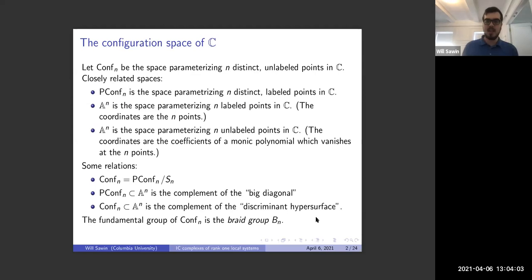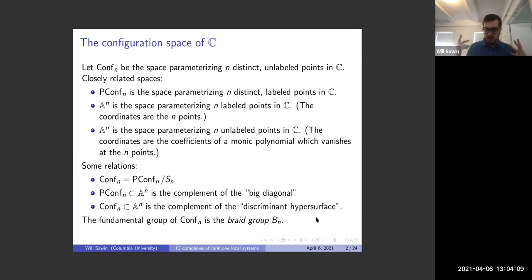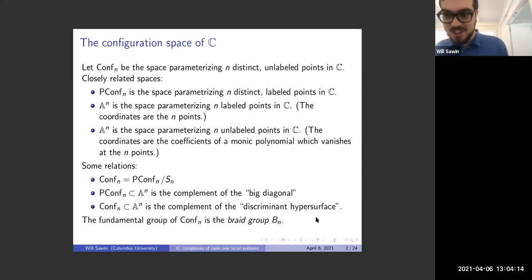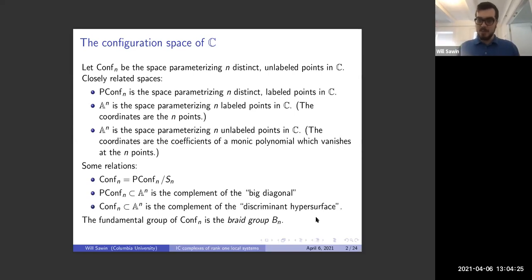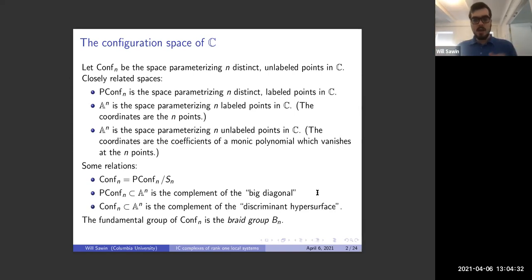Let me begin with something relatively classical: the configuration space of points in the complex line, which you can also think about topologically as the real plane. There are a couple of different flavors of how you can choose a basis of points in the plane, because you can force them to be distinct, or you can allow them to collide, and you can choose them labeled or unlabeled.